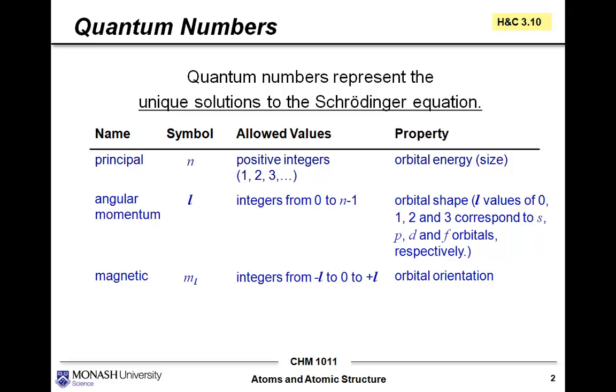We have the principal quantum number, which has the symbol n. This can be an integer 1 or higher: 1, 2, 3, 4, 5. We typically don't see n values higher than 5. This corresponds to the property of orbital energy or orbital size.